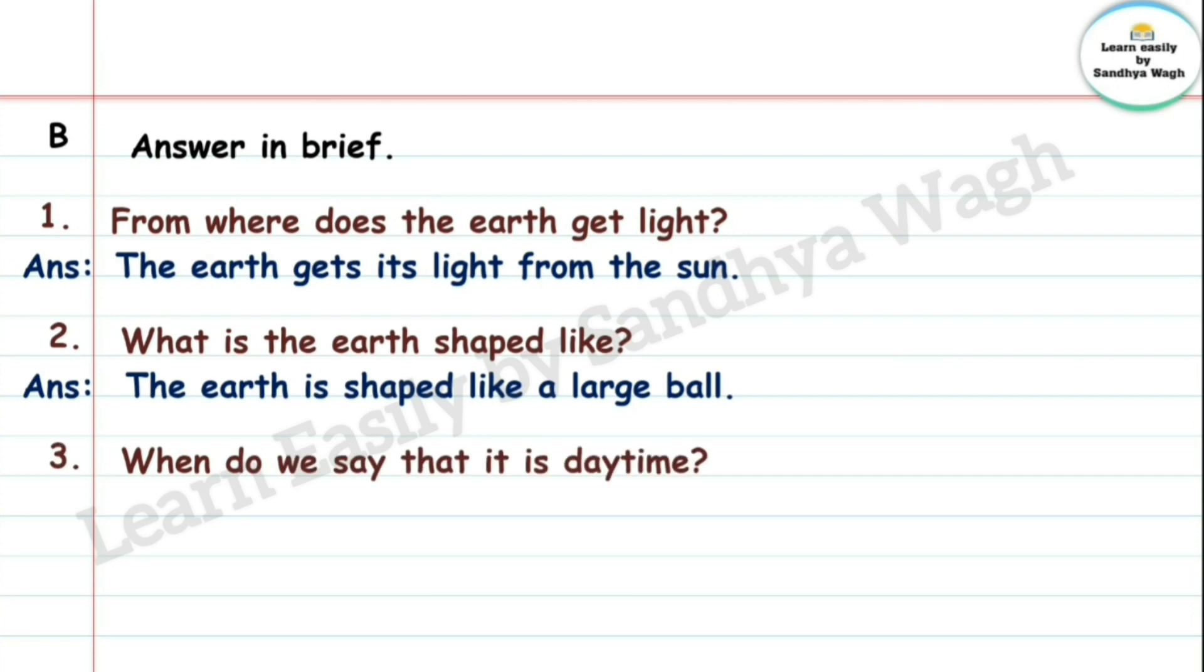3. When do we say that it is daytime? Divas ahe, day ahe, ase aapan ke vham unto? Answer: We say it is daytime when we get sunlight and it is bright.